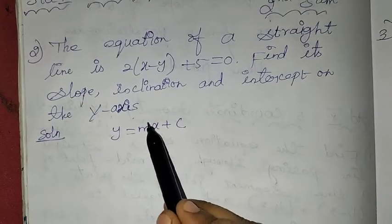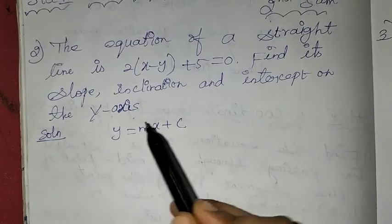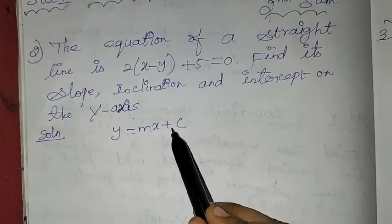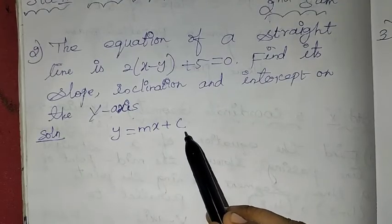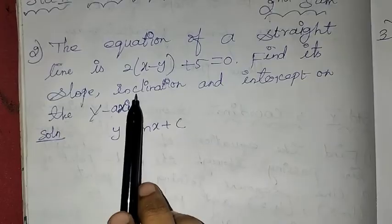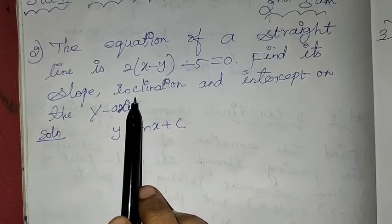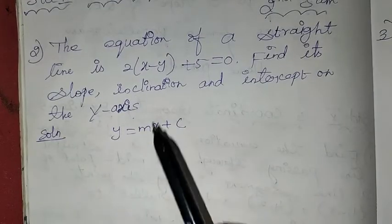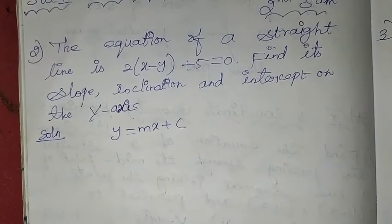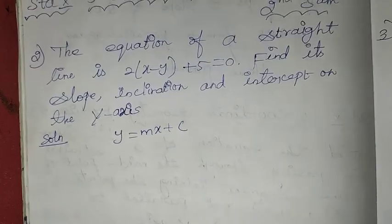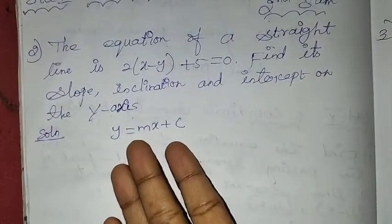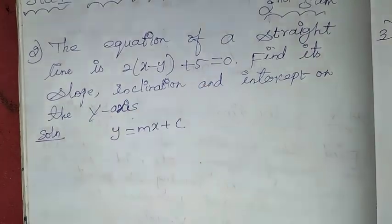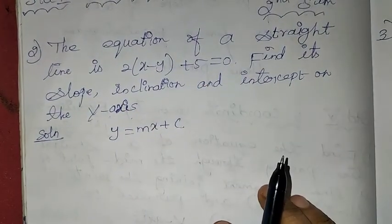Here, m is the coefficient of x, which is the slope, and c is the intercept. To find the inclination, we find the angle with the x-axis. Inclination is nothing but theta — the angle of inclination. If we find m, we use the formula m = tan θ, and from that we can find the theta value.